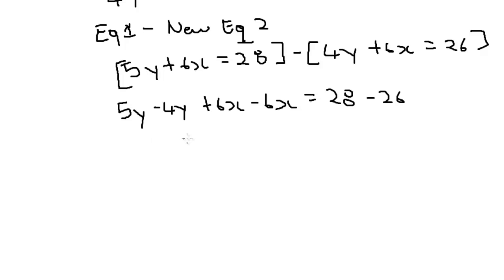5y minus 4y is y. 6x minus 6x is going to cancel, so I'm going to have 0 here. So y equals 28 minus 26, which is 2. Y equals 2. Now the next step is to substitute 2 for y in equation 1.